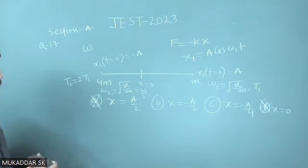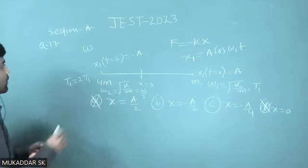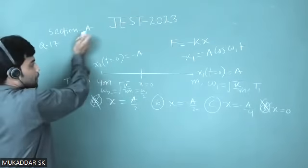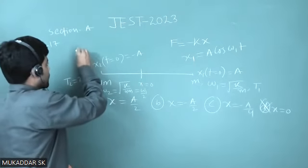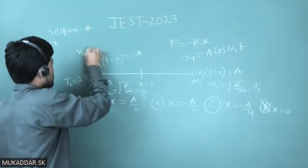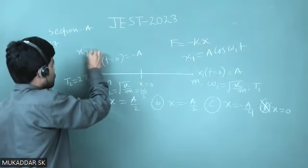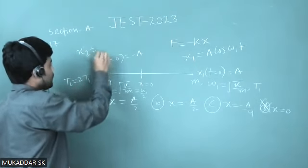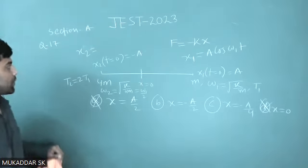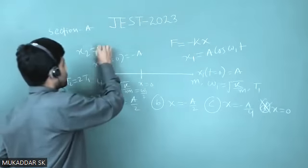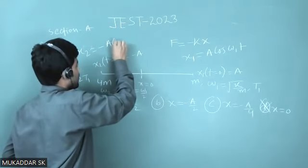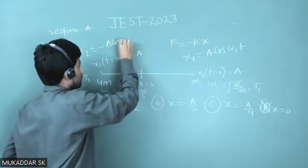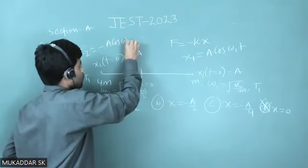On the other hand, if the particle starts from the negative extreme condition, then x₂ = -A cos(ω₂t).